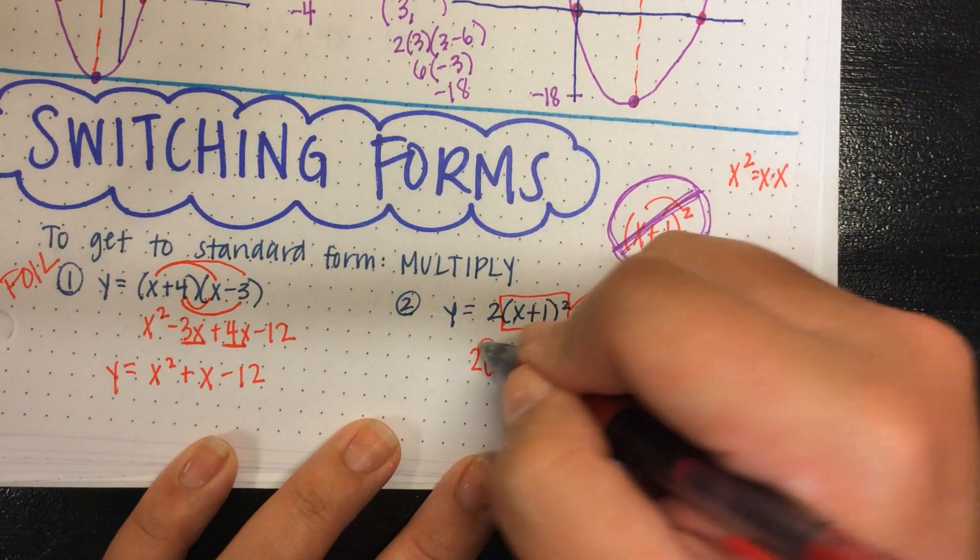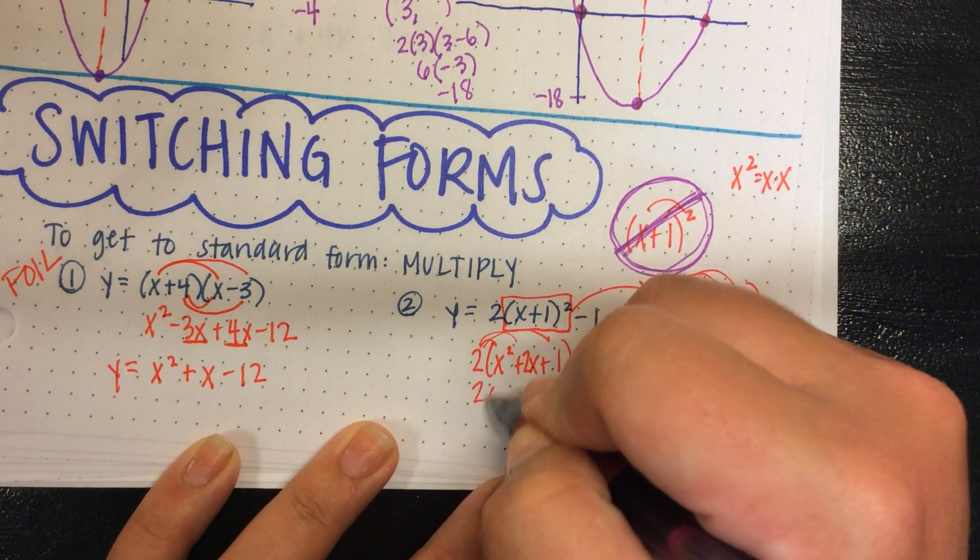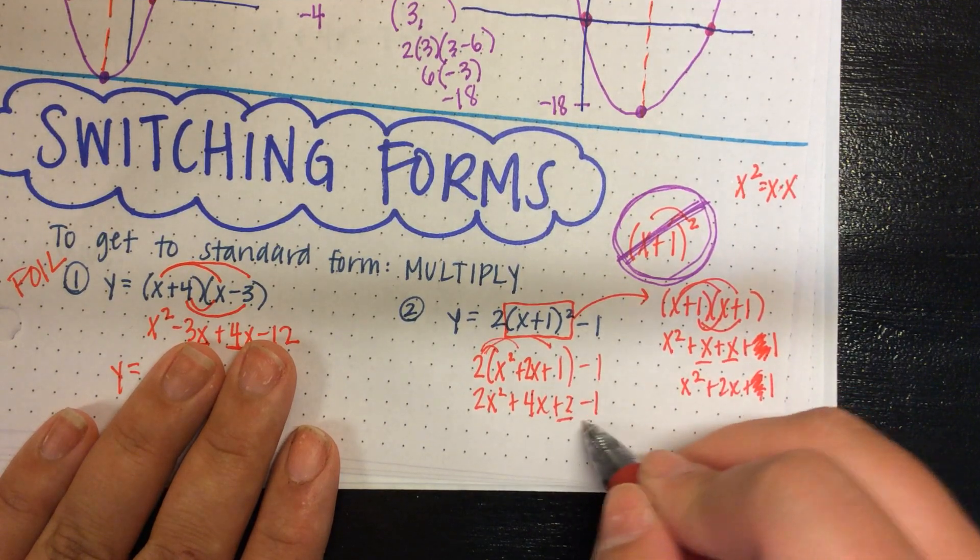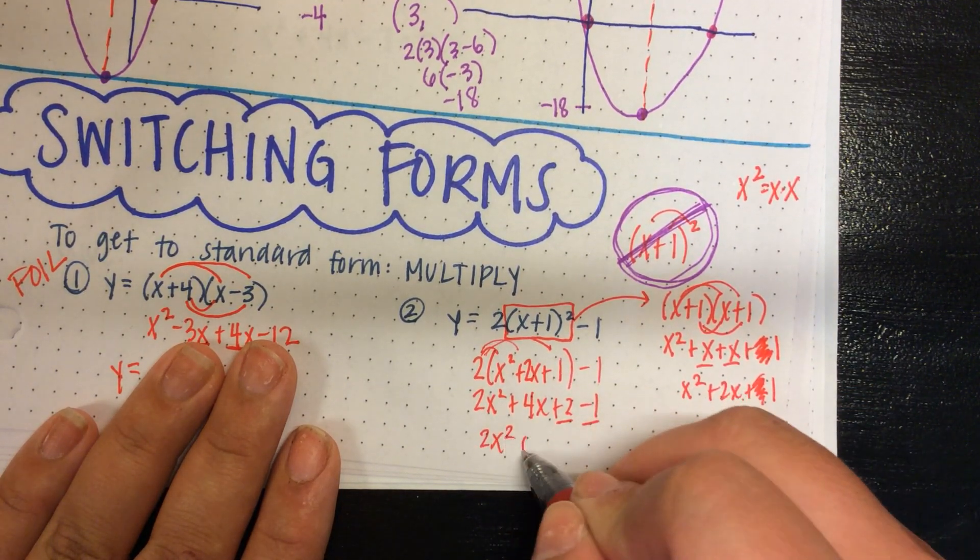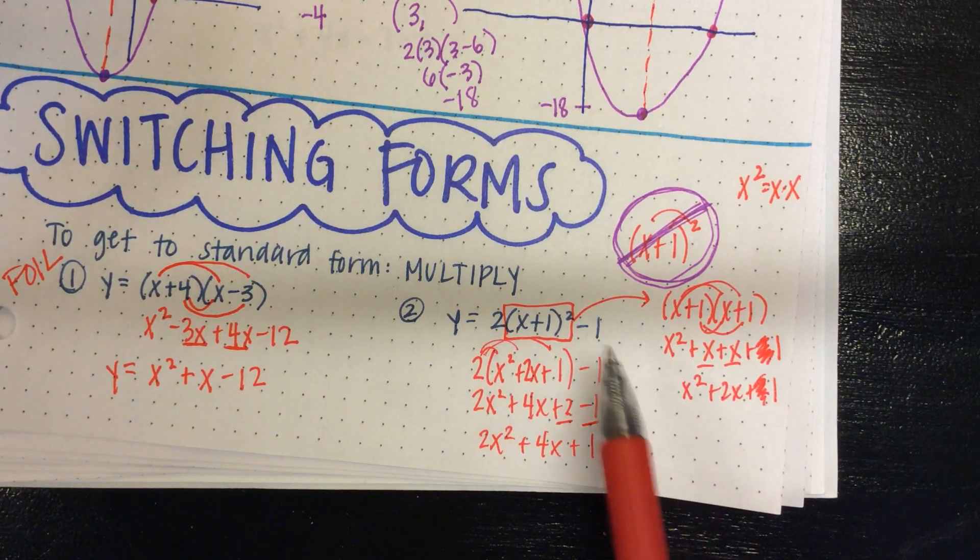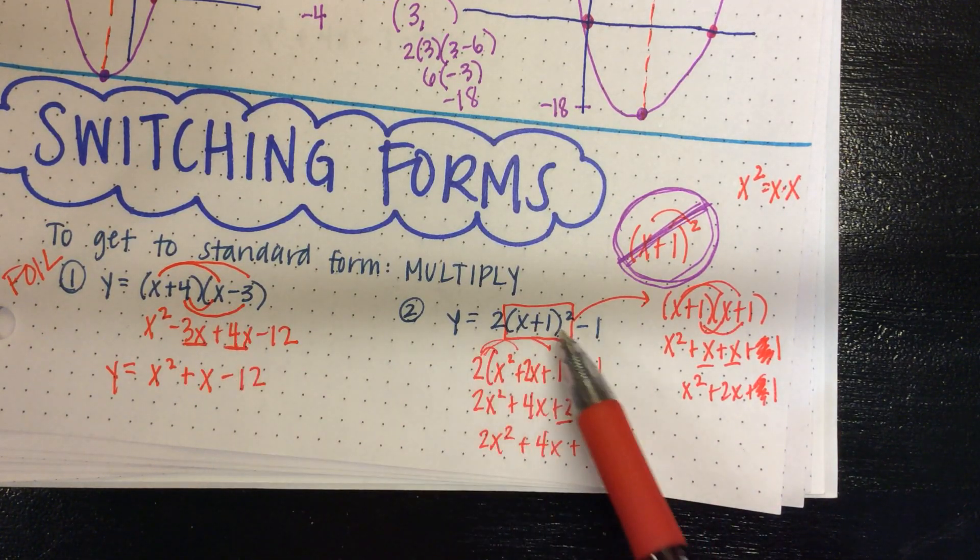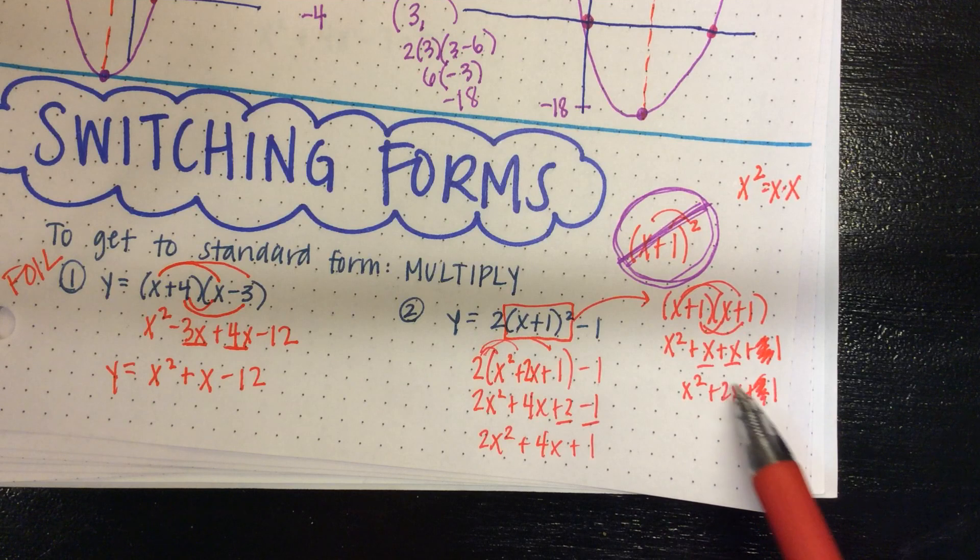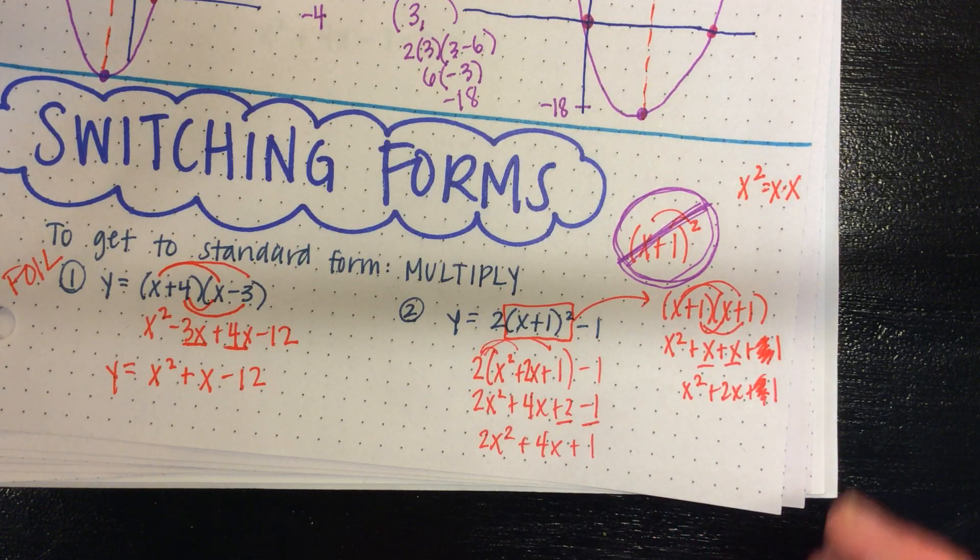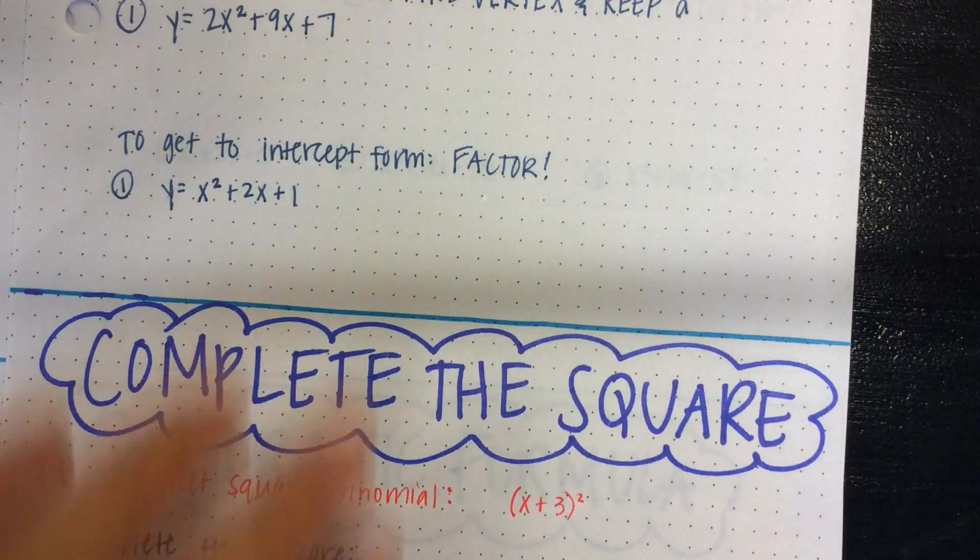So we have 2x squared plus 4x plus 2 minus 1. And then last step, I have like terms. So 2x squared plus 4x plus 1. All right, so a little more work than just FOILing. But don't forget, you have to FOIL the squared parentheses, then distribute, and then combine like terms. All right, but to get to standard form, you always multiply, regardless of what form you started in.